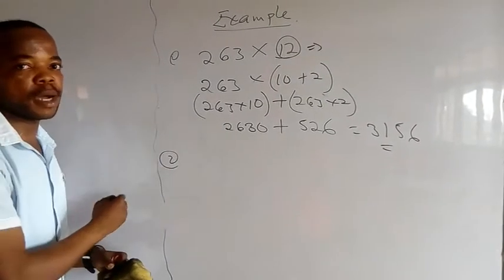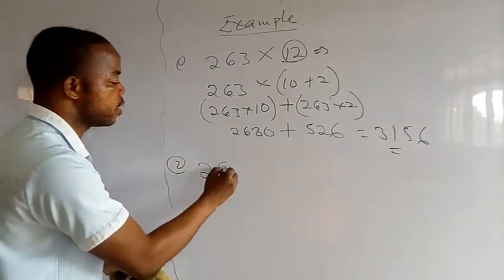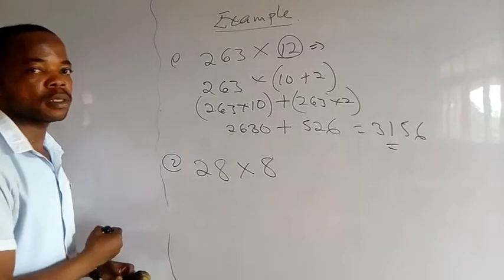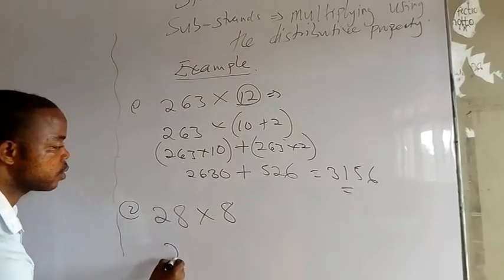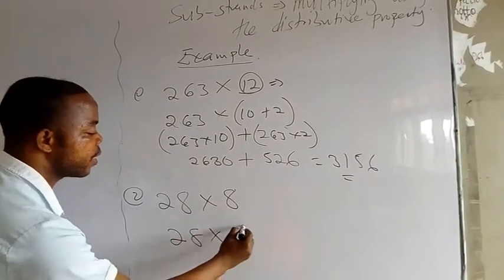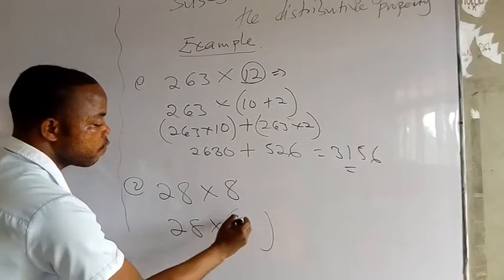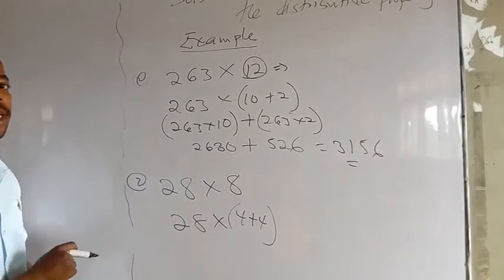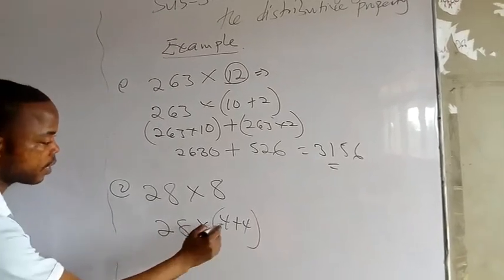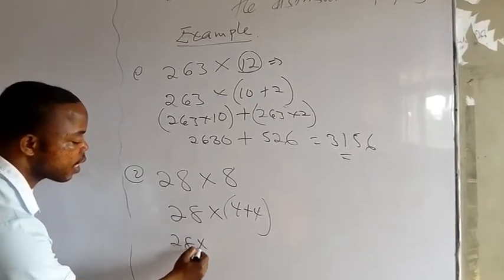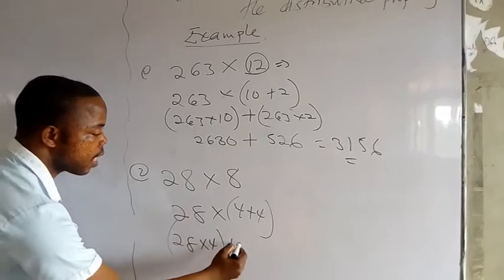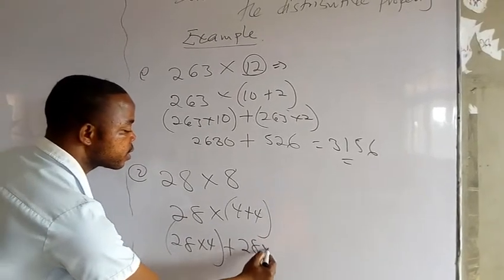Alright, so let's look at the second example. I have 28 times 8. So it can be written as 28, it can make it 6 plus 2, you get the same answer. It can also make it 4 plus 4, also you have to get the same answer. So I have 28 times 4 plus the same 28 times 4.